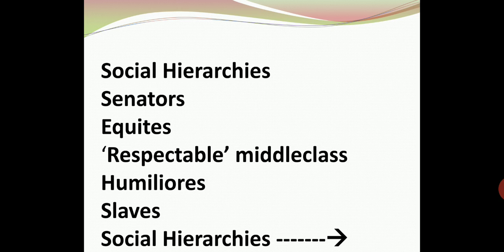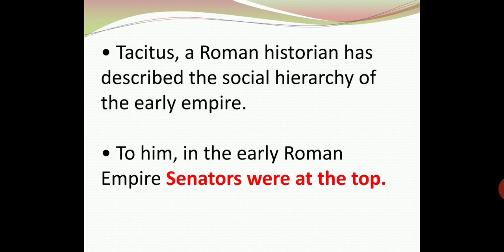Here we can see the social structure of the empire in terms of social hierarchies: senators, equites, respectable middle class, humiliores, and slaves. Let's read about them.